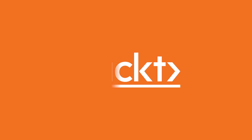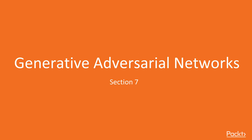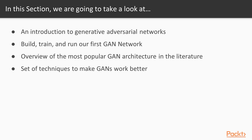In this section we're going to take a look at what generative adversarial networks are, how to build, train and run our first GAN networks. We're also going to see an overview of the most popular GAN architecture in the literature, known as deep convolutional GAN, or DCGAN. And finally we're going to see a set of techniques to make GANs work better.